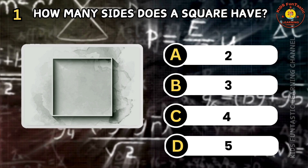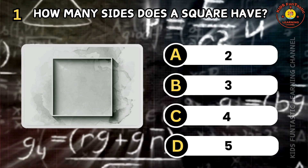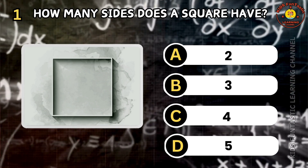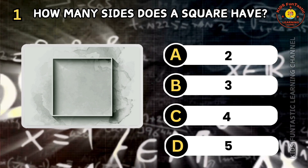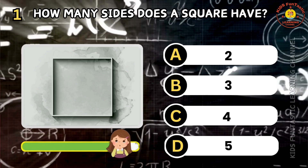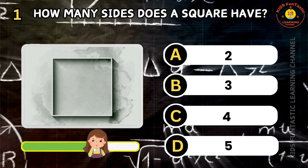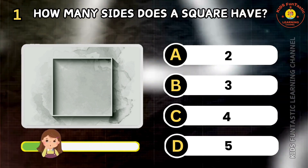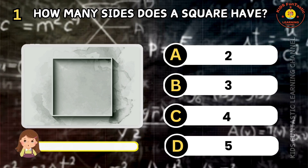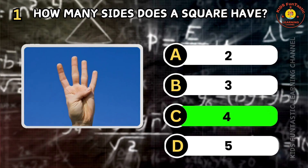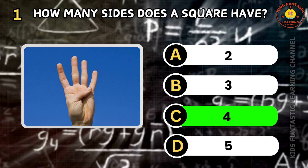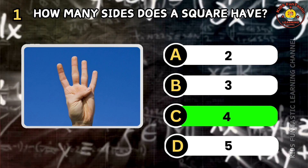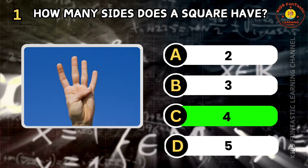Question 1. How many sides does a square have? A: 2, B: 3, C: 4, D: 5. You're doing great! The correct answer is C. A square has four sides.